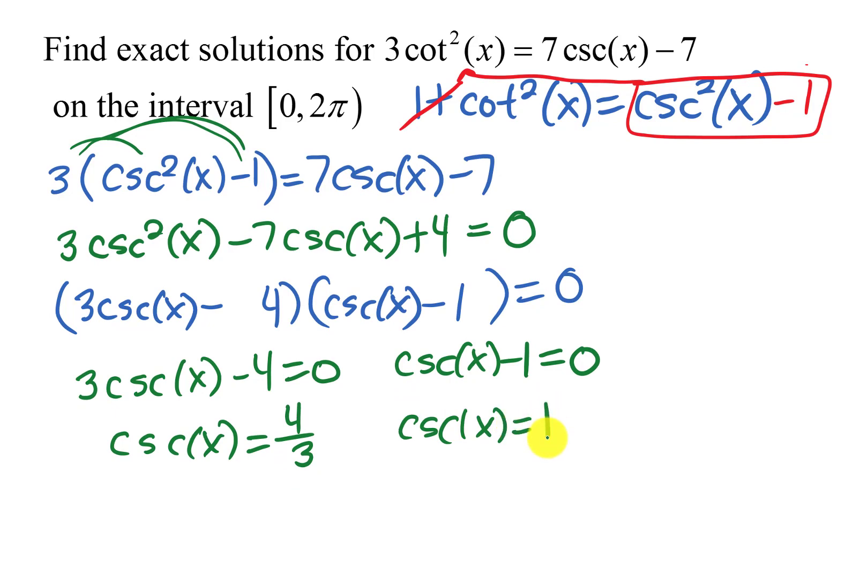Now I'm going to express both of these in terms of sine because if I need to use the inverse trig function, the calculator has sines, cosines, or tangents, not cosecant. So I'm going to take the reciprocal of both sides. 1 over cosecant x is sine x and the reciprocal of 4 thirds is 3 fourths. So 1 over cosecant x is sine x and the reciprocal of 1 is 1.